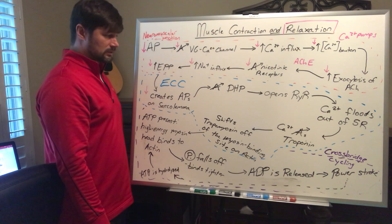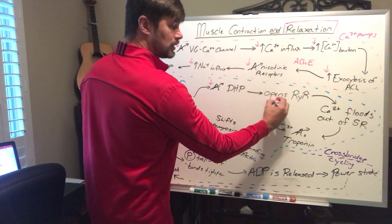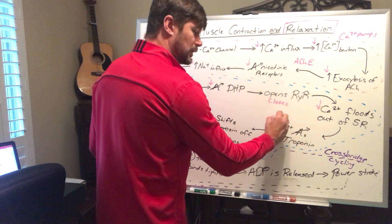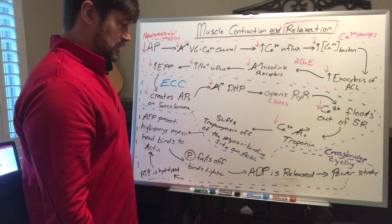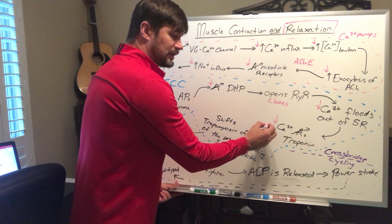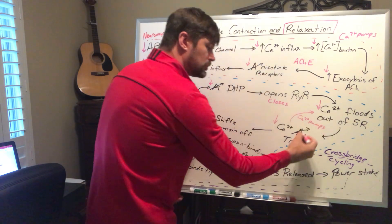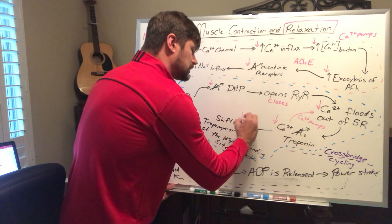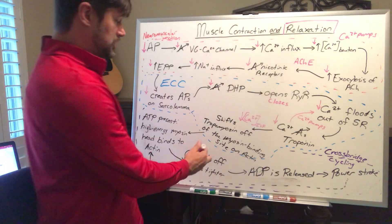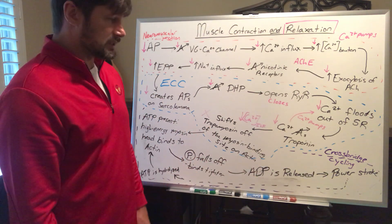Continuing the relaxation cascade: activation of the DHP decreases, the ryanodine receptor closes, calcium is no longer flooding out, so calcium activation of troponin stops. The calcium gets pumped back into the sarcoplasmic reticulum by calcium pumps, removing it from the intracellular fluid. That decreases the calcium concentration inside the muscle fiber, so tropomyosin stops shifting — it covers that myosin binding site and freezes the cross-bridge cycling.